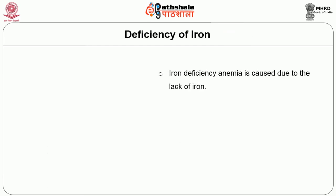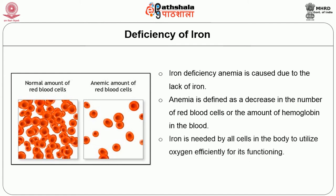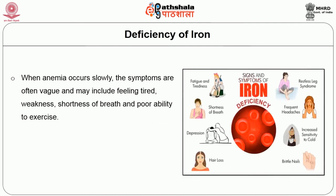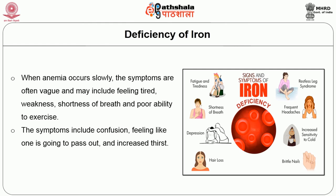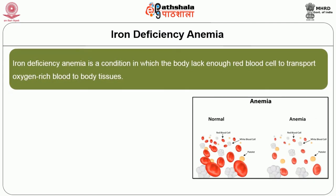If iron is deficient it will cause anemia, defined as a decrease in the number of red blood cells or the amount of hemoglobin in the blood. Iron is needed by all cells in the body to utilize oxygen efficiently. Majority of iron is present in red blood cells. When anemia occurs slowly, symptoms are often vague — fatigue, weakness, shortness of breath, and poor ability to exercise. Other symptoms include confusion, feeling faint, and increased thirst. Iron deficiency anemia is a condition in which the body lacks enough red blood cells to transport oxygen-rich blood to body tissues.